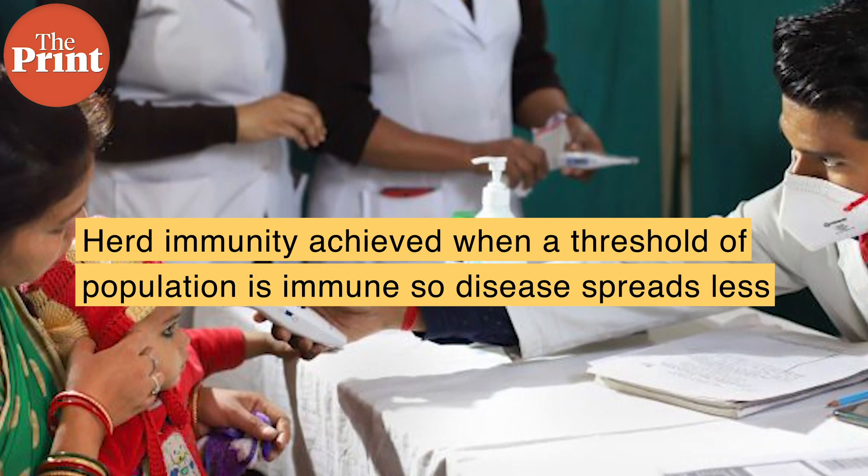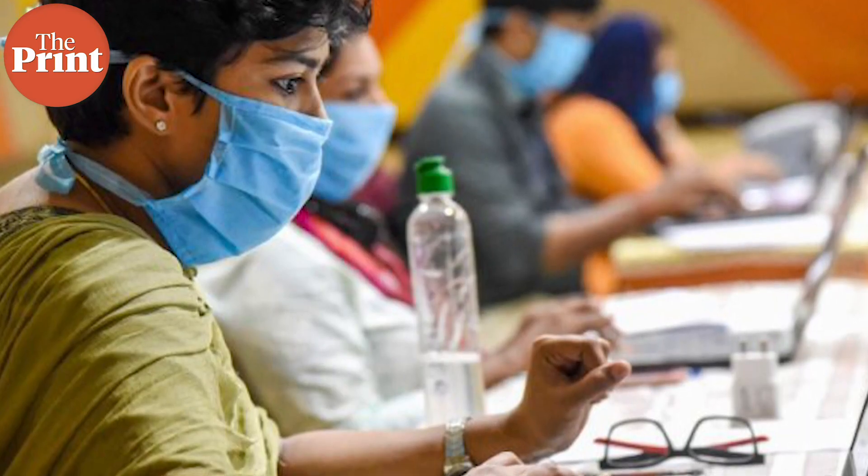When enough people in a community achieve immunity, the disease stops being an epidemic. It was a strategy that the UK flirted with for a while before realising that if the disease simply washed over its citizens unmitigated, a large portion of the population would die. Herd immunity is a concept associated with vaccinations and cannot be achieved naturally without thousands to even millions of preventable deaths.